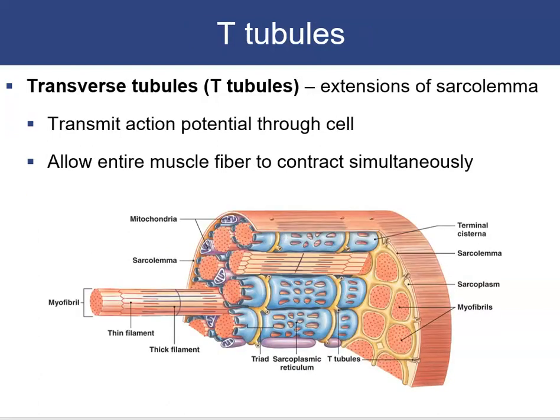Transverse tubules, or T-tubules, are extensions of the sarcolemma that extend into the sarcoplasm. You can see the holes on the surface of the cell where the T-tubule dives inward. They help to transmit the action potential into and through the muscle fiber, allowing the entire fiber to react and contract simultaneously.